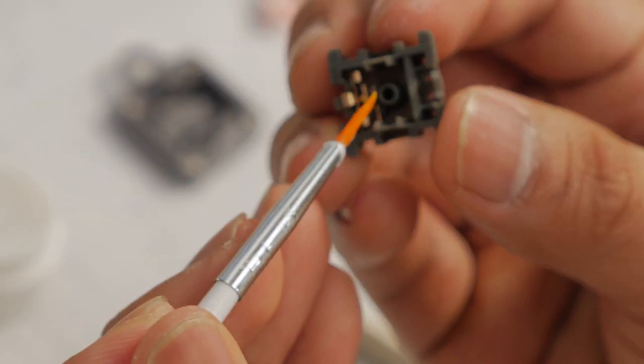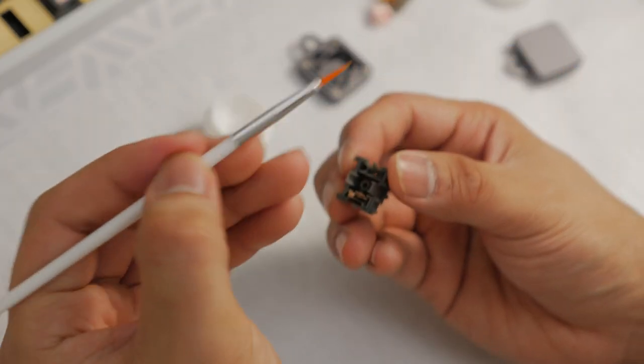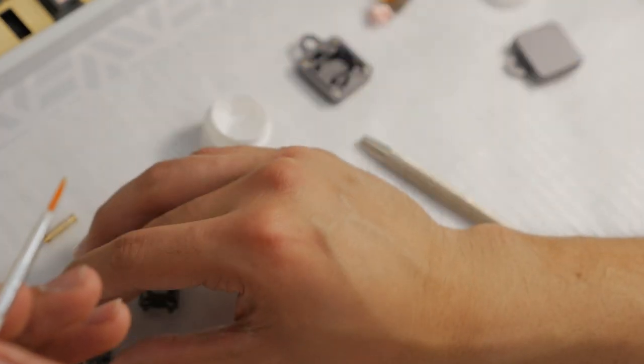And I always try to do one swipe around the center column as well. And if you notice this brush, the width is just enough to fit inside the rail. So that's why I like to use these brushes. After you do that, set that aside.